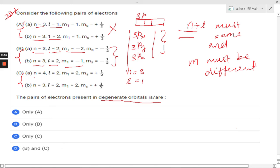In the pair C we can see for A, n equals to 4, for B, n equals to 3. Here the n is different, so this is not degenerate orbitals.